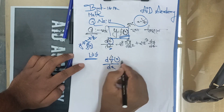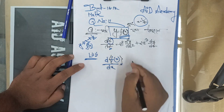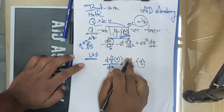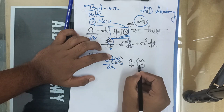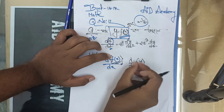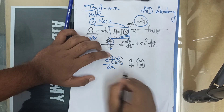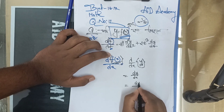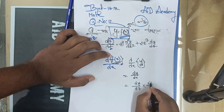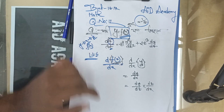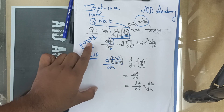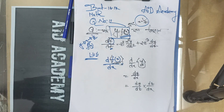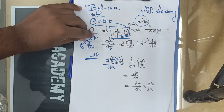Here we go — f of x function. What do we do? We do f of x, so we do f of y, so we do f of x, and we get dy by dx. So f of x dy divided by dx.